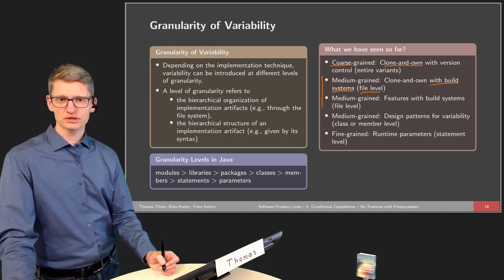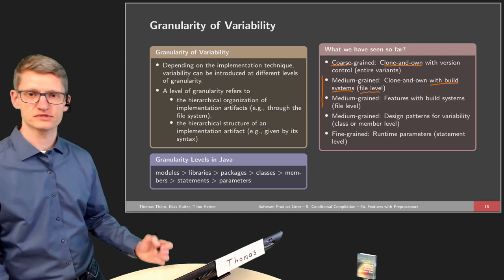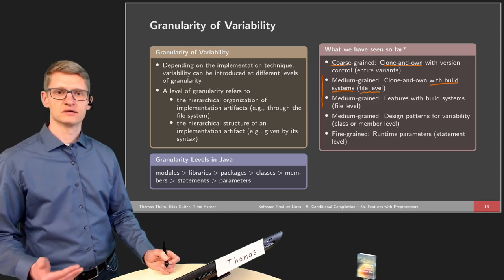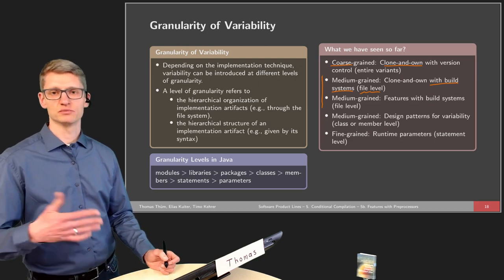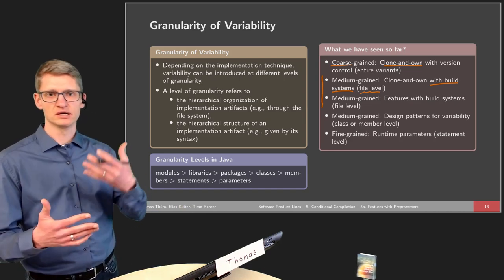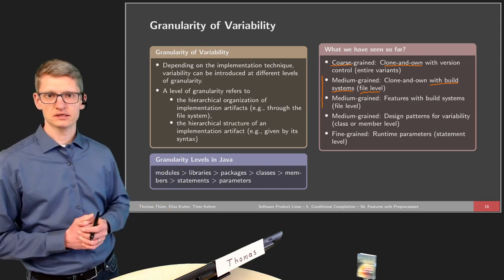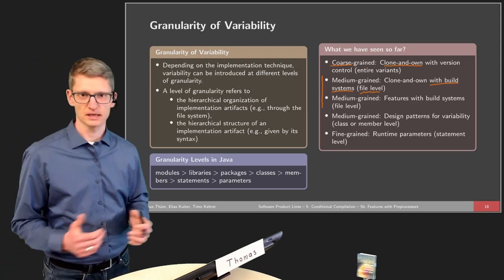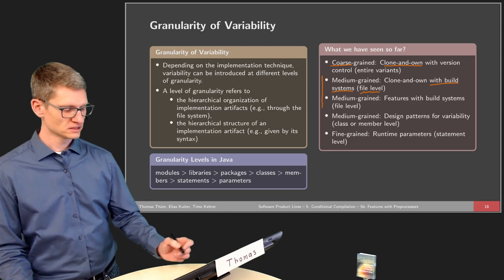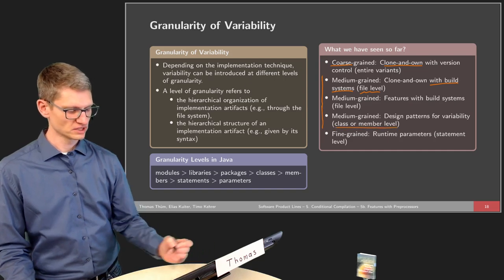In the second lecture's third part, we talked about design patterns for variability — how they support the vision of software variability and variation. In most cases, design patterns help achieve variability at the level of classes or members that could be added. For example, the template method pattern uses hook methods at certain positions which can be refined. The decorator pattern introduces new decorator classes. This is again medium-grained variability, slightly below file level but typically related to class or member level.